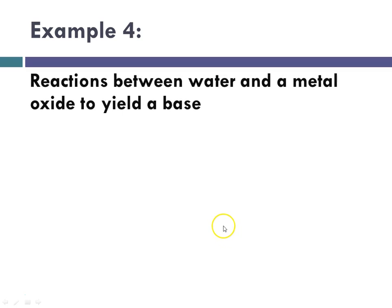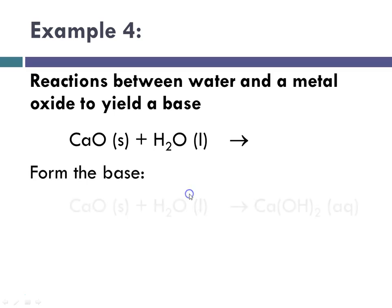Example 4, reactions between water with a metal oxide to yield the base. So here calcium oxide plus water are going to form the base. So calcium oxide plus H2O will yield, in this case, CaOH2.